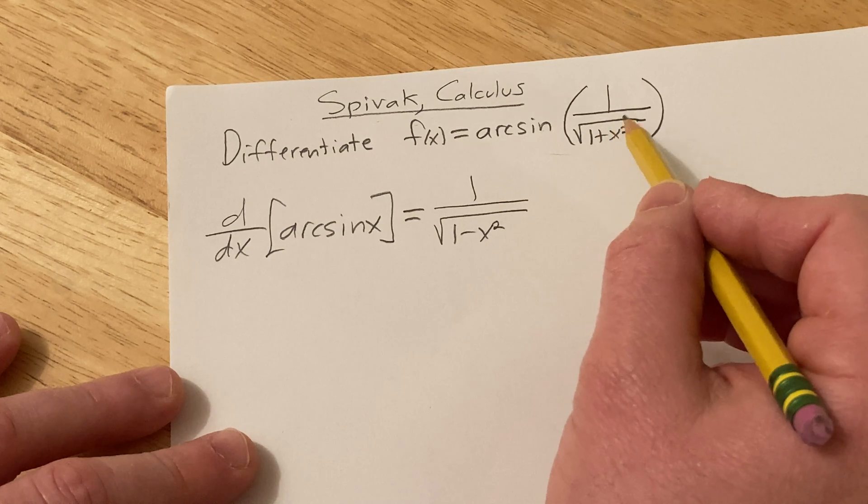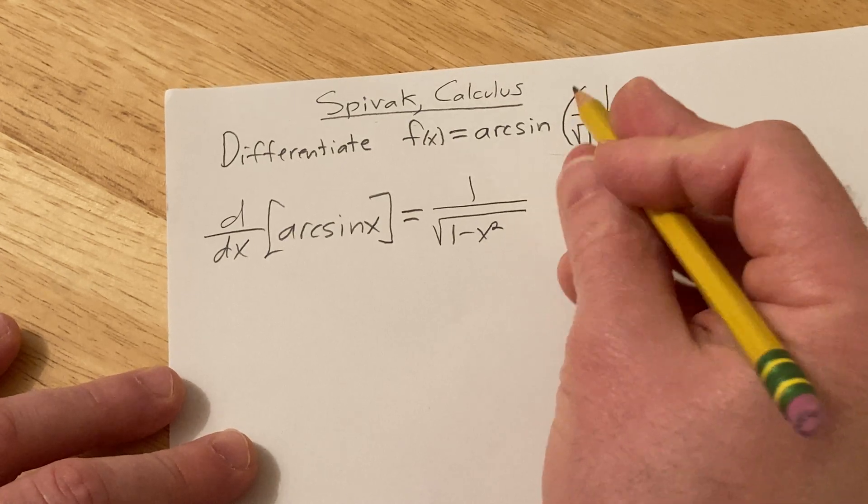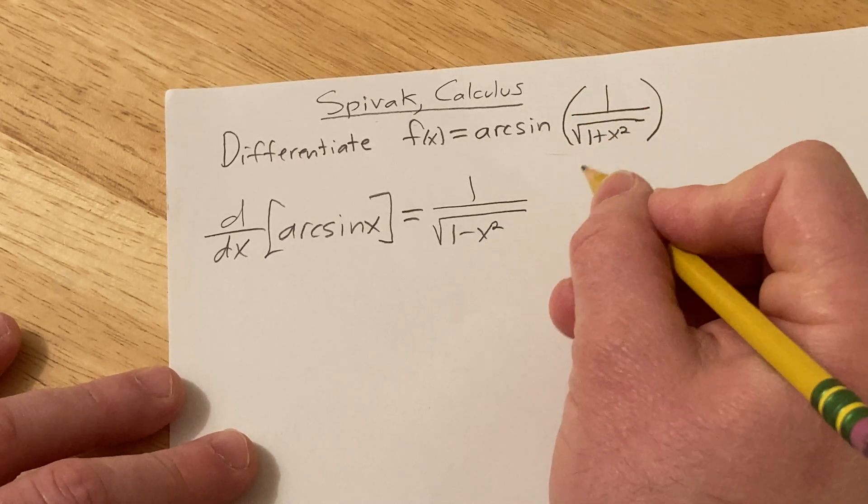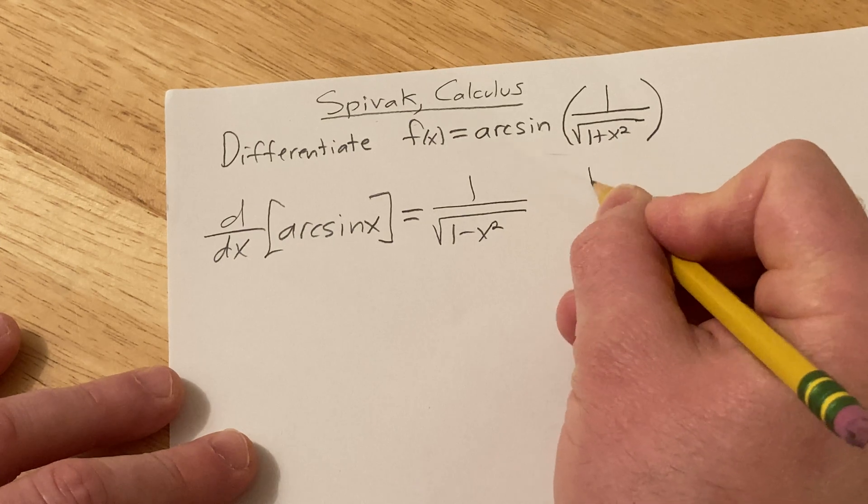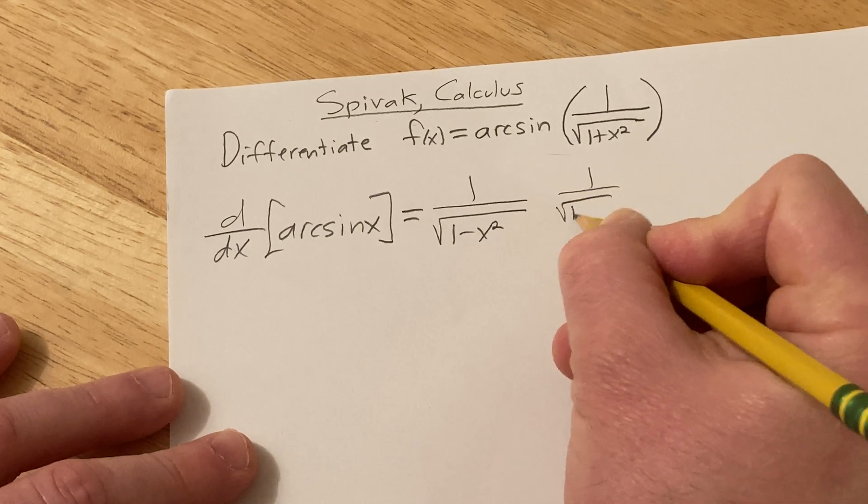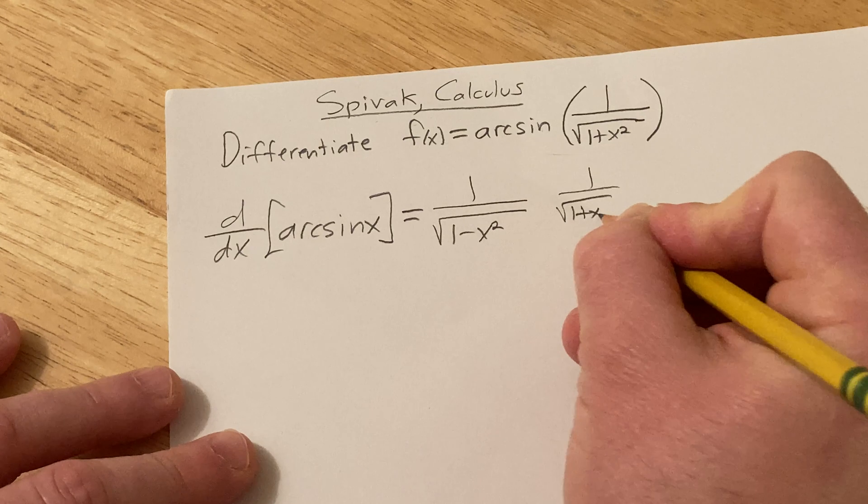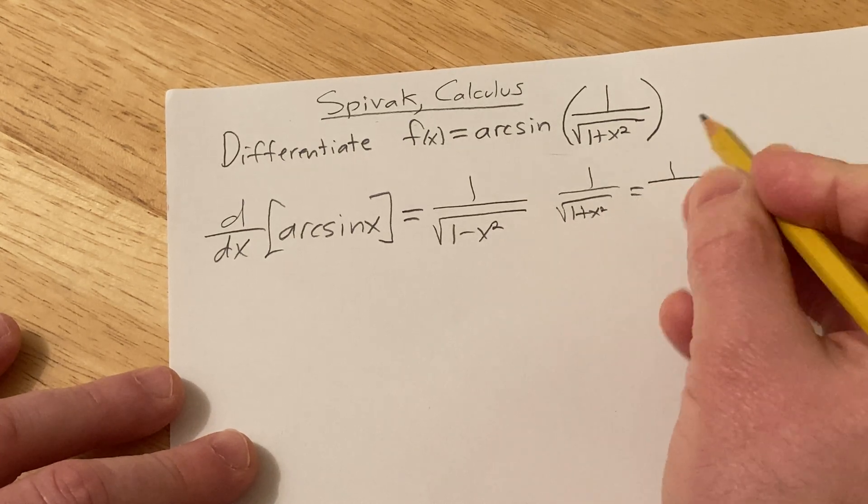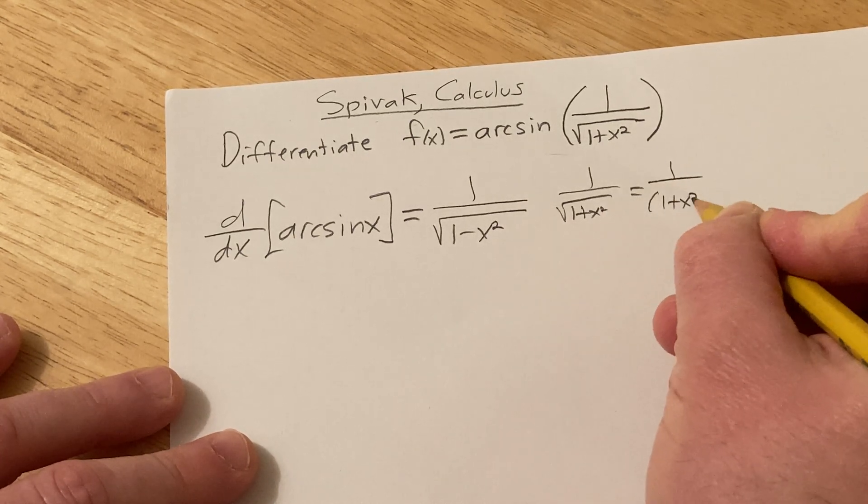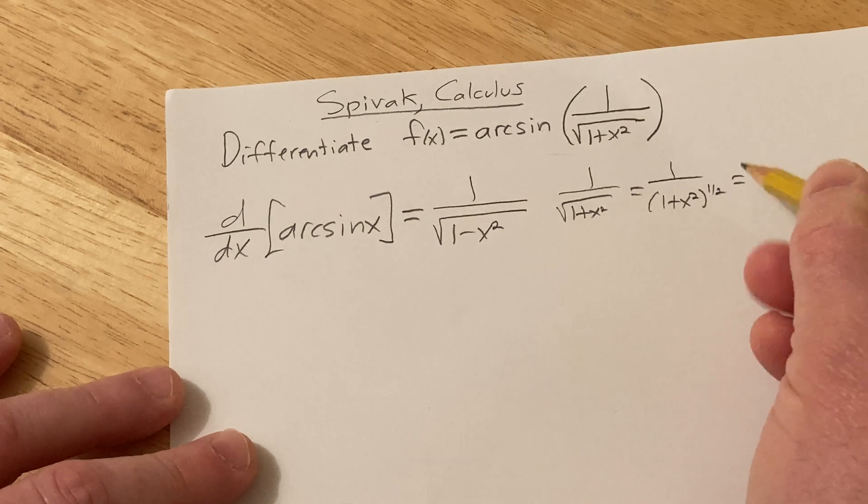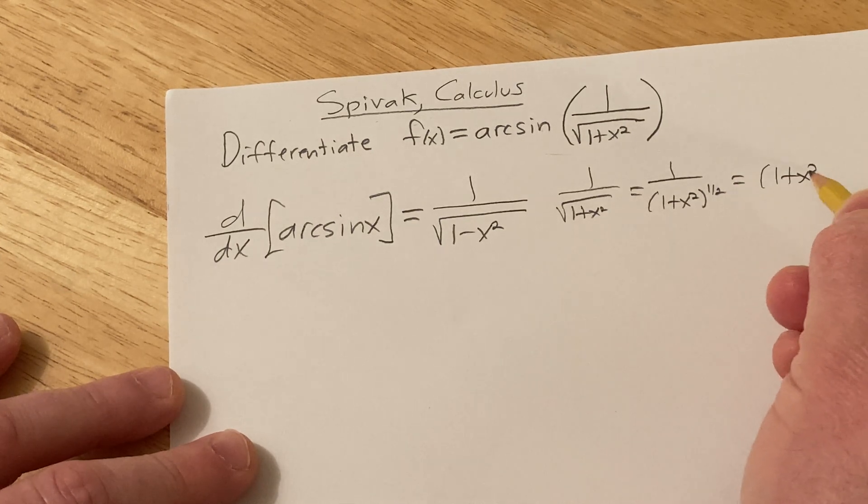Well this inside function is really hard to differentiate in the way it's written. So I'm just going to basically rewrite this. Note that if you have 1 over the square root of 1 plus x squared, that's really 1 over 1 plus x squared to the 1 half. And you bring it upstairs and that's 1 plus x squared to the negative 1 half.